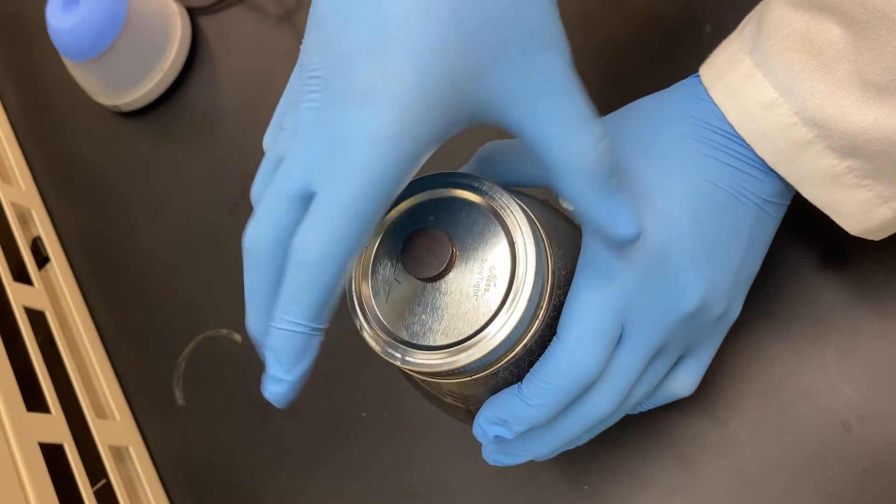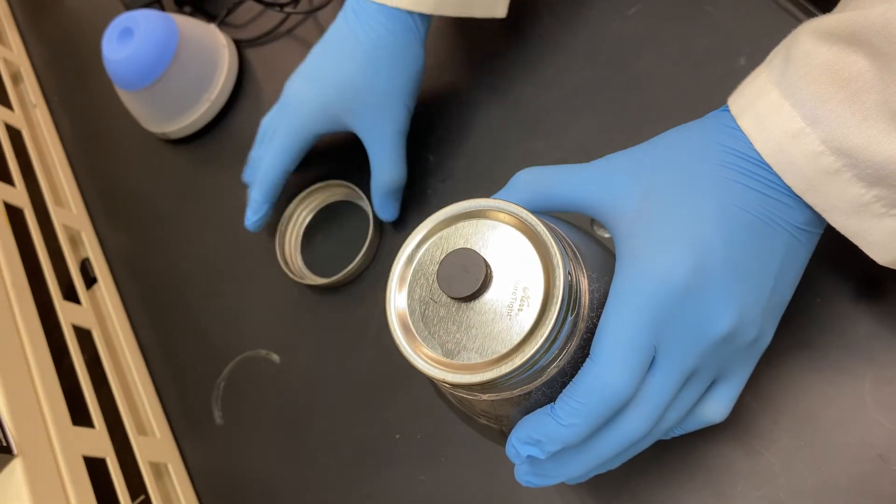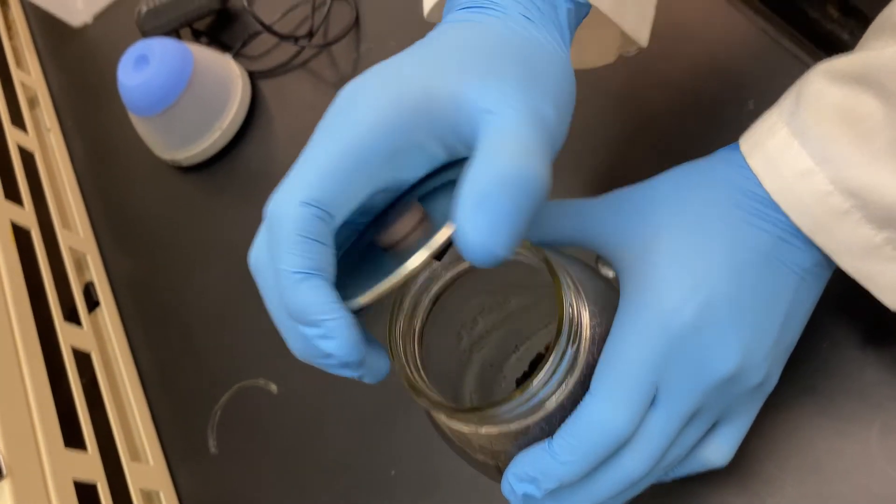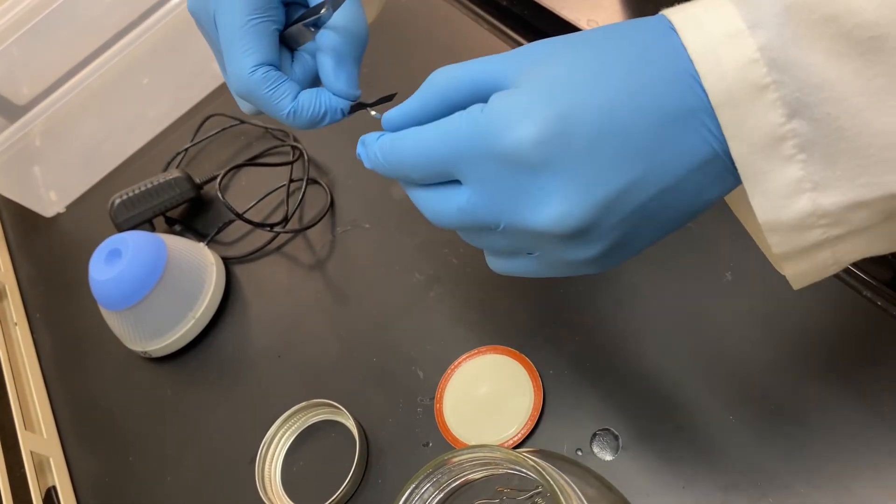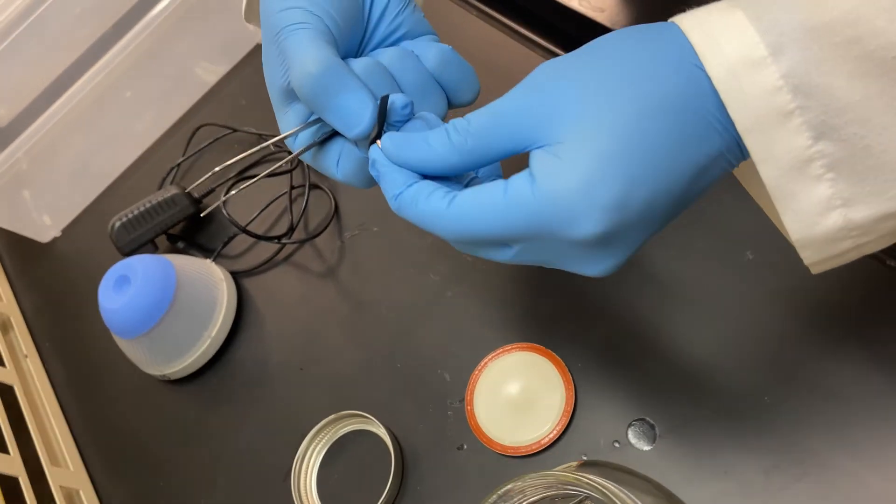Once cooled, remove the mason jar from the oven and into your fume hood. Open it and remove the activated charcoal strip using clean gloves and tweezers. Make sure you sanitize your tweezers before removing the strip.